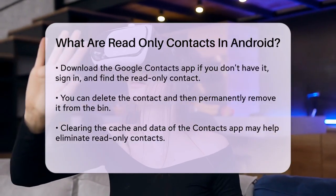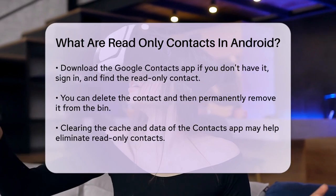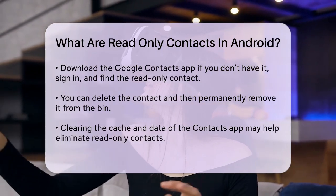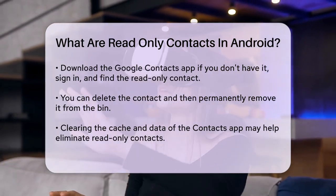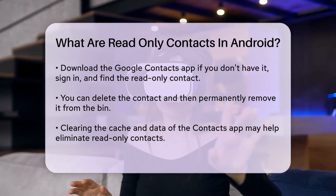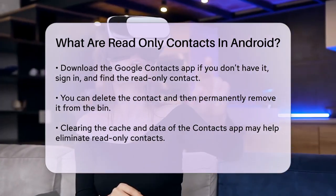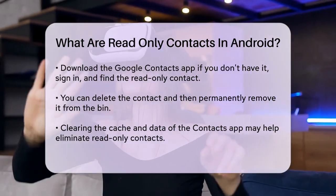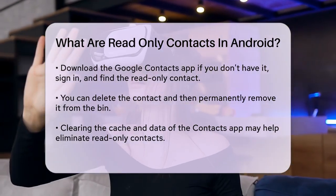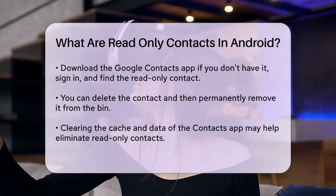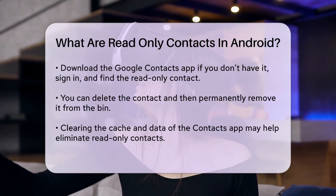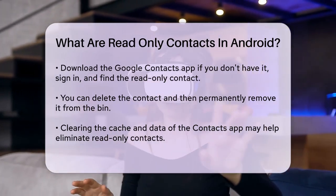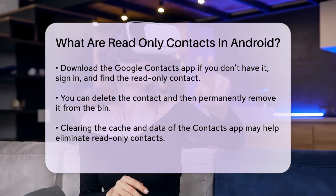Finally, go to the Fix and Manage section, select the bin, and delete the contact permanently. If these methods don't work, you can try clearing the cache and data of the Contacts app itself. Go to your phone's settings, find the Contacts app, and clear its cache and data. This can sometimes remove the read-only contacts.